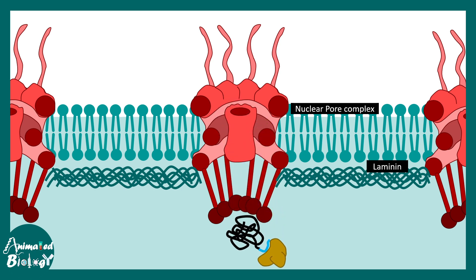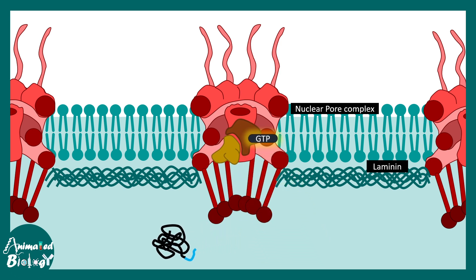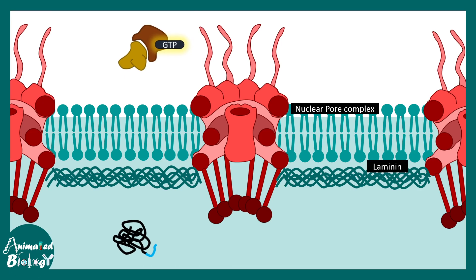The importin–protein complex is now inside the nucleus. Inside the nucleus, a GTPase protein known as RanGTP interacts with the protein and the importin complex, freeing the protein from importin. RanGTP then exports the importin out of the nucleus.